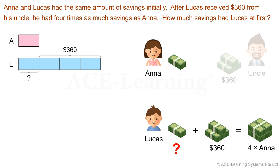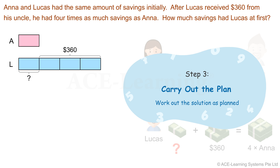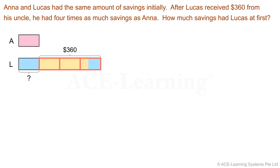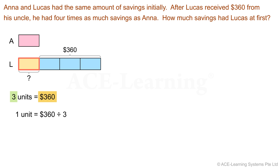Now that we have devised the plan, let's proceed to Step 3: Carry out the plan. We'll execute the solution as planned. Take a look at this section in the model — we can see that three units are equal to $360. So we write: three units = $360. Therefore, one unit = $360 ÷ 3 = $120.